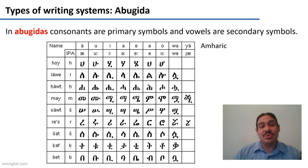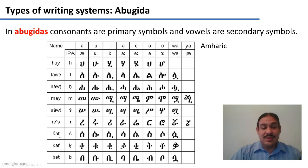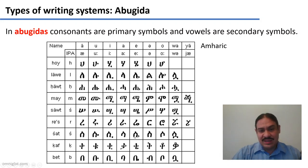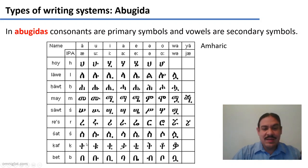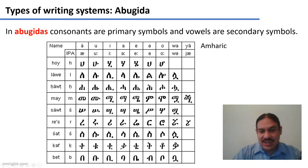Amharic, for example, is also a type of abugida. As you can see, the letters have a certain basic shape for all the consonants, and then special markings for the specific vowel. So this is K, and this is Ka, Ku, Ki, and so forth. There is a basic shape, but there is a secondary shape used to mark the vowel.